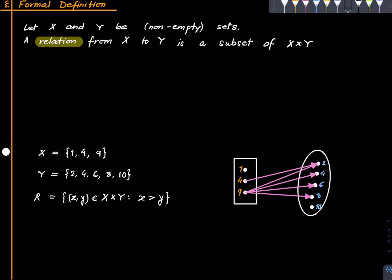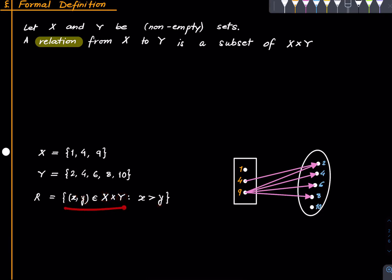Let's see an example. Here we have the set x consisting of {1, 4, 9} and the set y is {2, 4, 6, 8, 10}. The relation we want to put from x to y records which elements of x are greater than which elements of y — the ordered pairs (x, y) with x from X and y from Y such that x exceeds y.